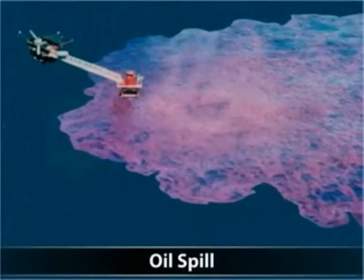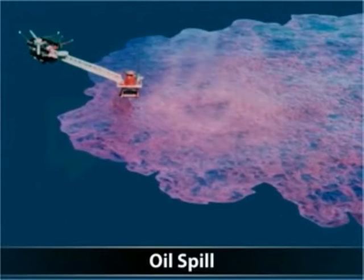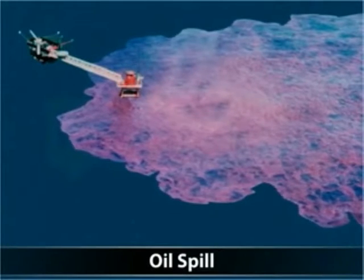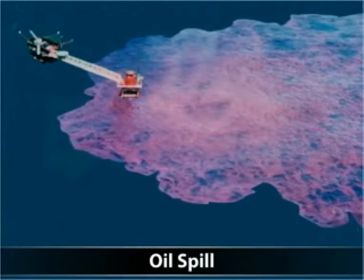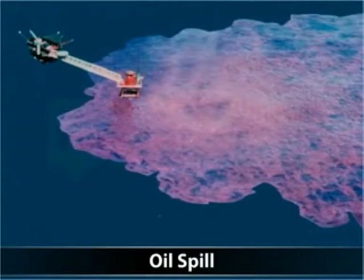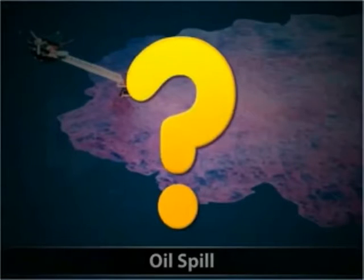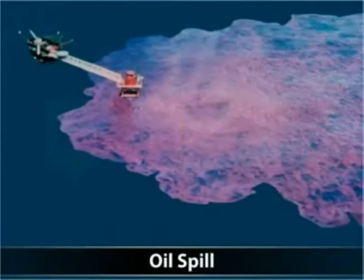Have you heard about oil spills and their effects? An oil spill is the release of oil in water bodies like oceans and seas. Oil and water are immiscible — that is, they do not dissolve into each other — so the oil floats on the surface of the water, leading to destruction of aquatic life. But how can these two be separated? Let us find out by performing an activity.